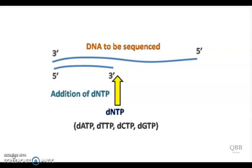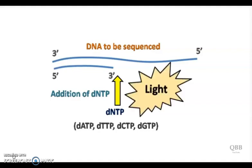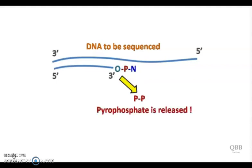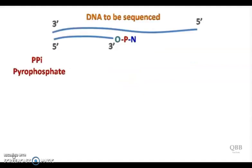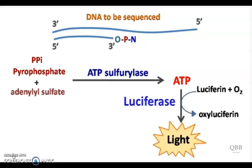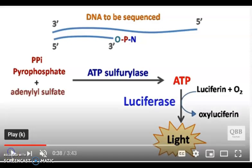Pyrosequencing is a sequencing technique in which incorporation of dNTPs in the DNA is detected in the form of light. When a dNTP is added on the template DNA, pyrophosphate is released and it can be converted to ATP by the enzyme ATP-sulfurylase. The ATP can be utilized by the enzyme luciferase to generate light. This is the same enzyme that generates light in fireflies. Along with ATP as an energy source, luciferase also uses oxygen and luciferin as a substrate.